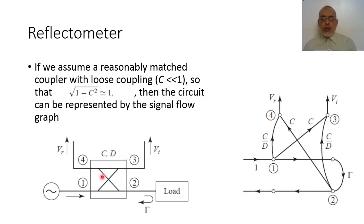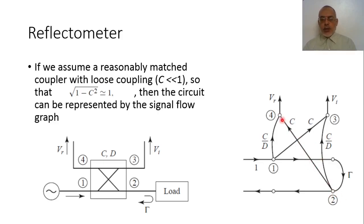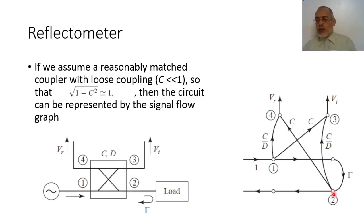We have two sampled signals: one from port 1 to port 3 through the coupling coefficient. Due to the directivity of the directional coupler, some of the power in port 1 is also transferred to port 4, since the coupler is not perfectly isolated — this coupling follows the coupling-over-directivity ratio. Similarly, some power can be transferred from port 2 to port 3 due to directivity.